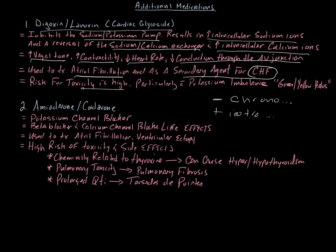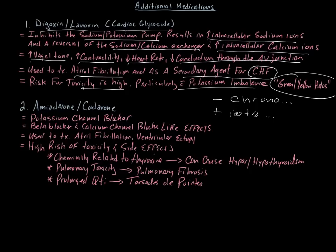Patients on digoxin for CHF are typically also on beta blockers and diuretics, raising their risk for potassium imbalances and toxicity. The classic symptom of digoxin toxicity is visual changes—specifically, green or yellowish halos in vision.